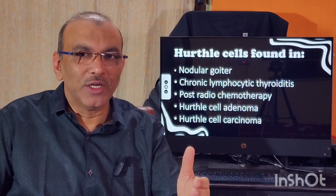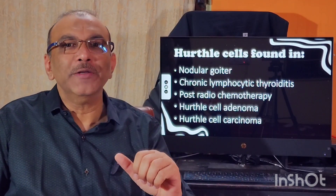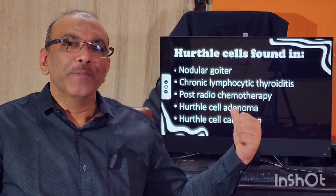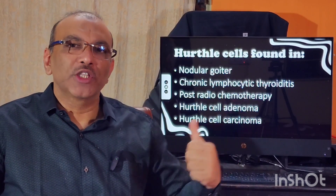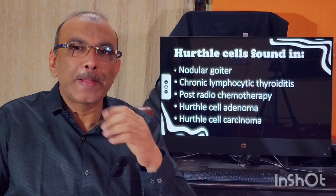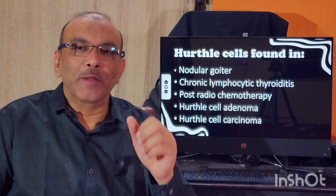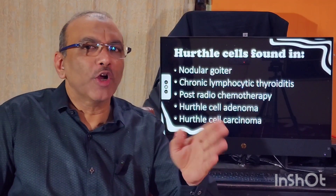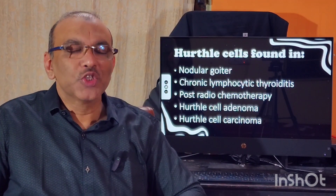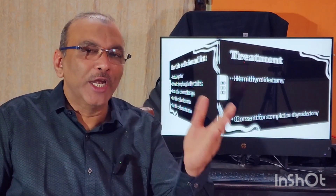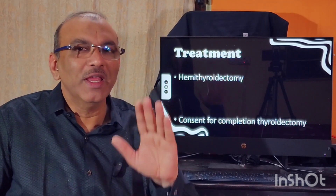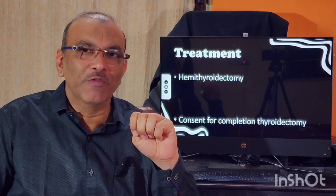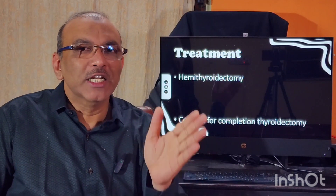Furthermore, Hurthle cells can be seen in other conditions as well — such as colloid nodular goiter, Hashimoto's thyroiditis (also known as chronic lymphocytic thyroiditis), post-radiotherapy or chemotherapy, and follicular adenoma and carcinoma. So we cannot make out the difference on cytology alone. If we want to differentiate between adenoma and carcinoma, we need the full specimen.